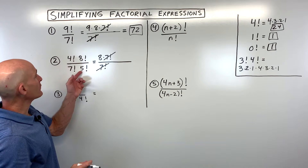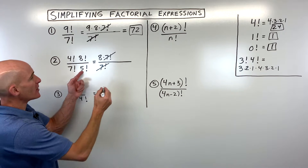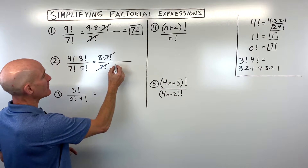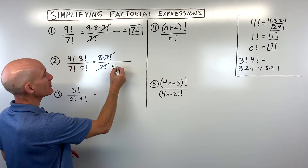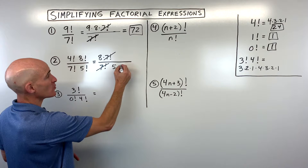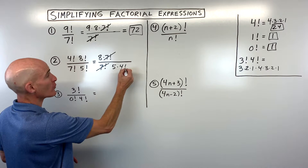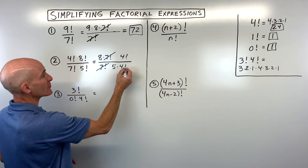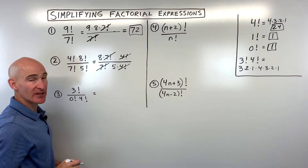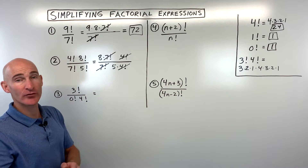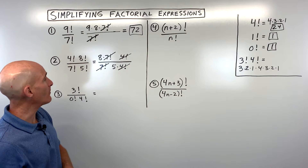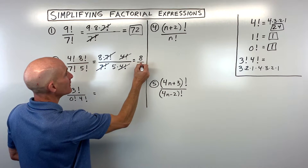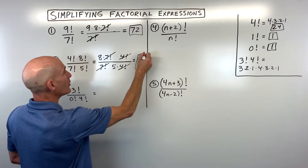When I look at the four and the five, those are fairly close. I like to start with the bigger one, so the five: five times four times three times two times one, or I could just say five times four factorial. This way the four factorials in numerator and denominator cancel. So we're really just left with eight over five, and that's as far as we can simplify.